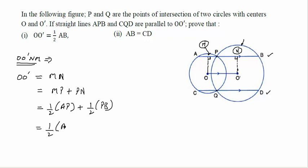If you combine these two things, you will get half of AP plus PB. But go back to the figure, AP plus PB will combine to form AB. So you should get half of AB, which is equal to OO'. This is your first part.